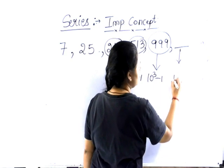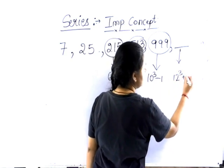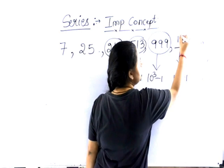12 cube plus 1. How much is it? 1728 plus 1, 1729.